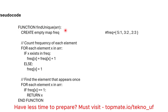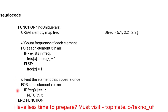Let's start understanding the pseudocode. The function is called find_unique(arr), where arr holds the array of elements. First, create an empty dictionary called frequency. Then, for each element x in arr, if x exists in frequency, increment frequency[x] by one. If x is not already present, add it to the dictionary and set its value to one. After this step, the frequency dictionary has been created.